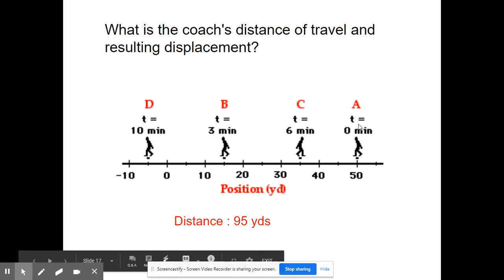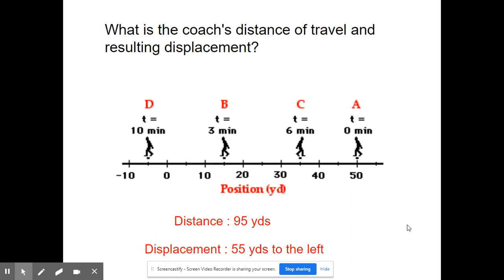All right, so the total distance traveled by the coach is going to be 95 yards. Now think. Here's the initial position, here's the final. Let's get the displacement. Well 50 to zero and another five. That means he traveled, well the displacement here is 55 yards to the left.